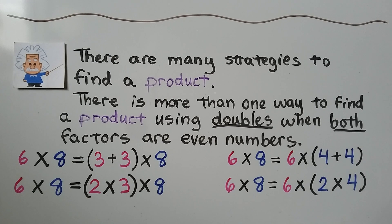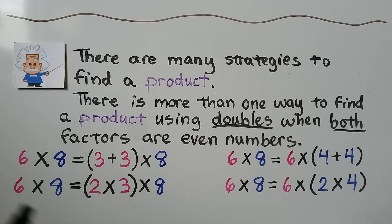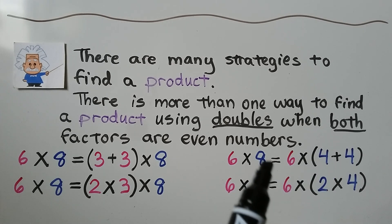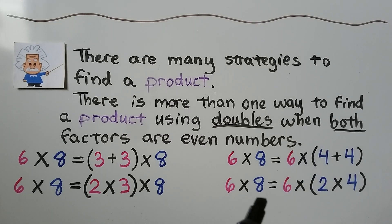There are many strategies to find a product. There's more than one way to find a product using doubles when both factors are even numbers. 6 is an even number and 8 is an even number. We can break apart the 6 into a 3 plus 3 and multiply by 8 using the distributive property, or break apart the 6 as a 2 times 3, or break apart the 8 into a 4 plus 4, giving 6 times 4 plus 4, and distribute. We can also rewrite 6 times 8 as 6 times 2 times 4. There are many ways to find a product when both factors are even numbers.